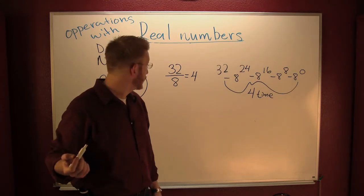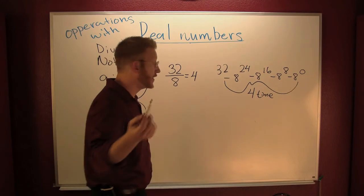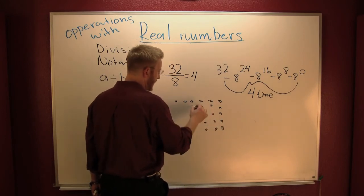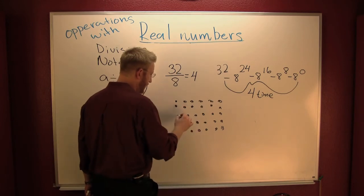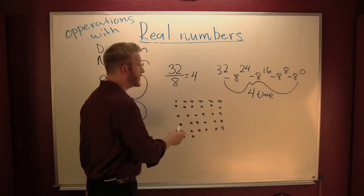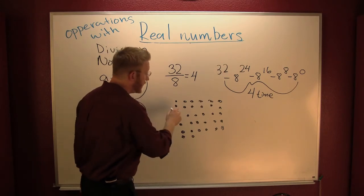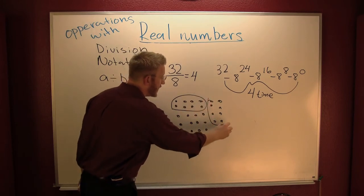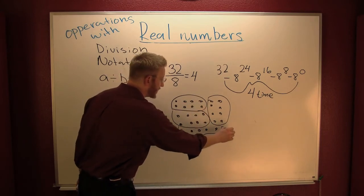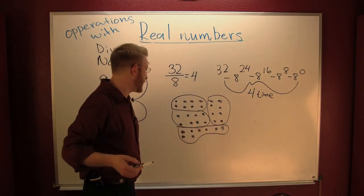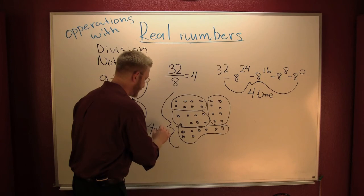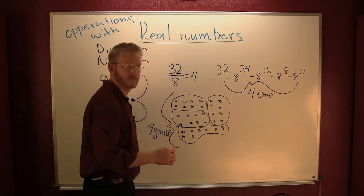Because there are four groupings of eight in thirty-two. I drew 32 dots up there — it was a squeaky event. If I wanted to go circling groups of eight: here's a group of eight, here's a group of eight, here's a group of eight, here's a group of eight. How many groups of eight do you see in 32? You see four groups. Division.